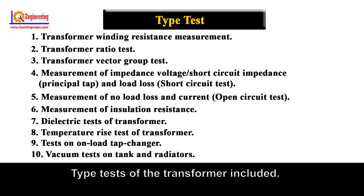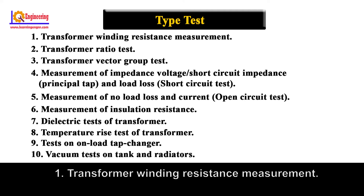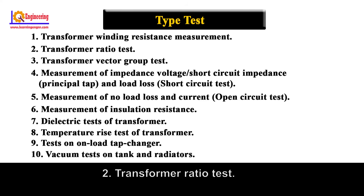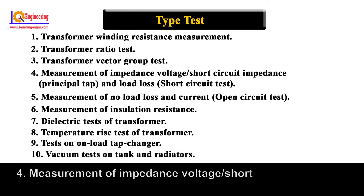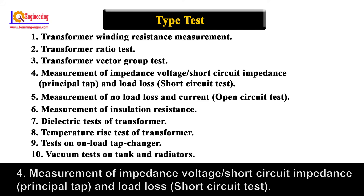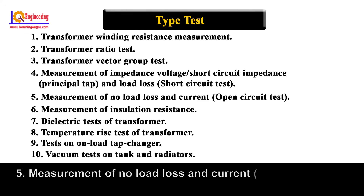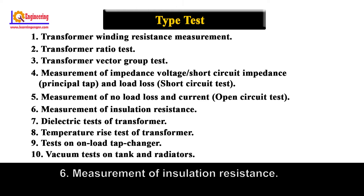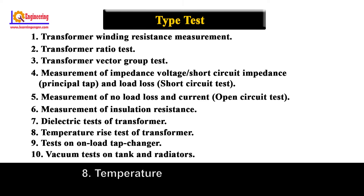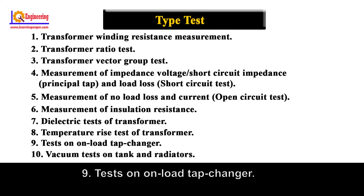Type test of the transformer includes: Number 1, Transformer Winding Resistance Measurement; Number 2, Transformer Ratio Test; Number 3, Transformer Vector Group Test; Number 4, Measurement of Impedance Voltage or Short Circuit Impedance at Principal Tap and Load Loss (Short Circuit Test); Number 5, Measurement of No Load Loss and Current (Open Circuit Test); Number 6, Measurement of Insulation Resistance; Number 7, Dielectric Test of Transformer; Number 8, Temperature Rise Test of Transformer; Number 9, Test on No Load Tap Changer; Number 10, Vacuum Test on Tank and Radiators.